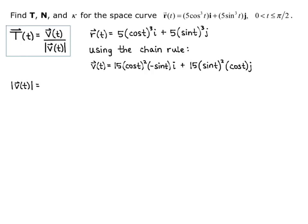Now I want the magnitude of velocity. So if I square each component, I get magnitude of velocity equals the square root of 225 cosine to the fourth of t times sine squared of t, plus 225 sine to the fourth of t times cosine squared of t.